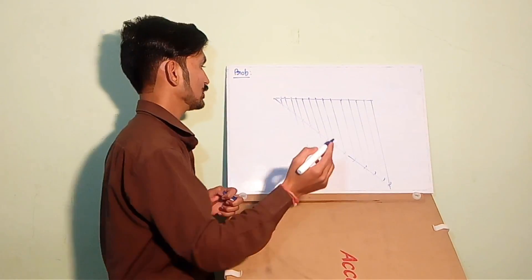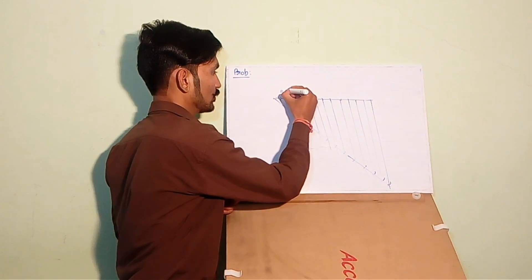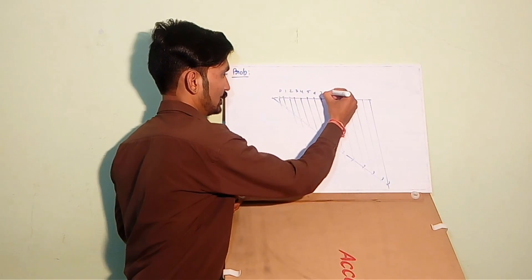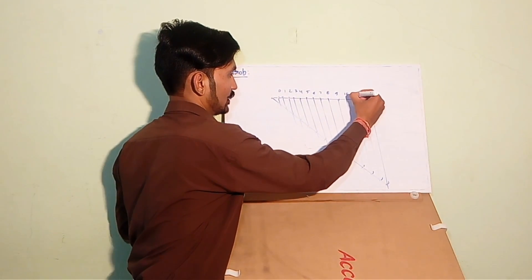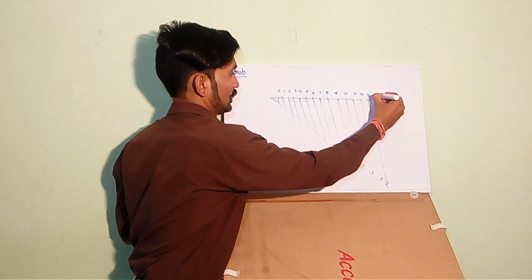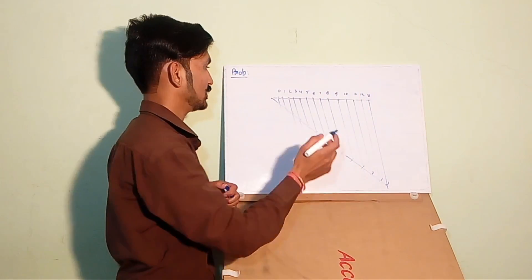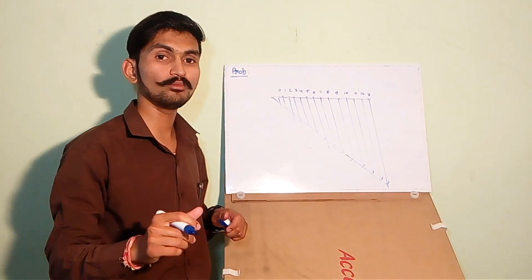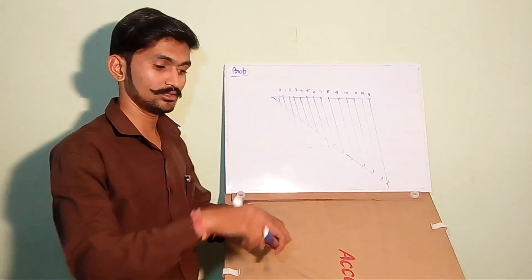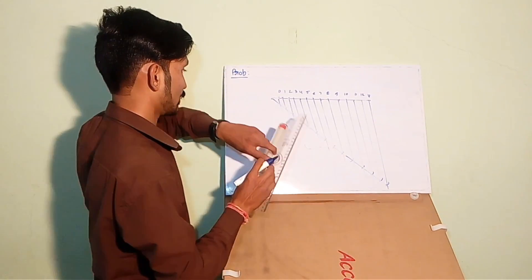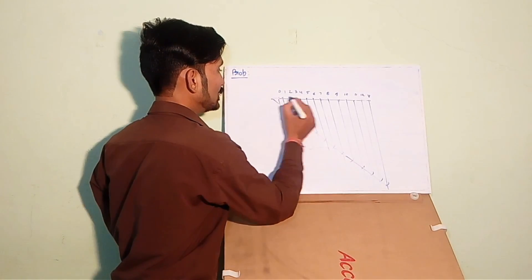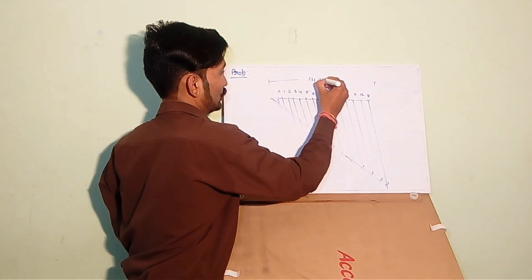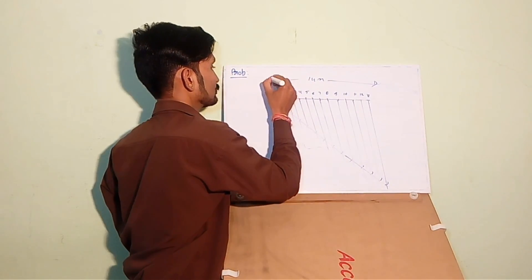These will be numbered from 0, 1, 2, 3, 4, 5, 6, 7, 8, 9, 10, 11, 12, 13. Because we are starting from 0. Why are we starting from 0? You will get an idea after a few minutes. Now, this length equals 14 meters.